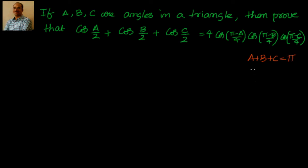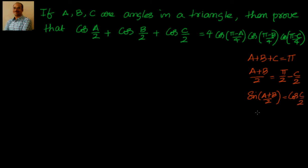That also tells us (a+b)/2 equals π/2 minus c/2. So if I apply sin on it, sin(90° − c/2) is cos(c/2). Similarly, if I apply cos on it, cos((a+b)/2) equals sin(c/2). We will keep these results and use them if needed.